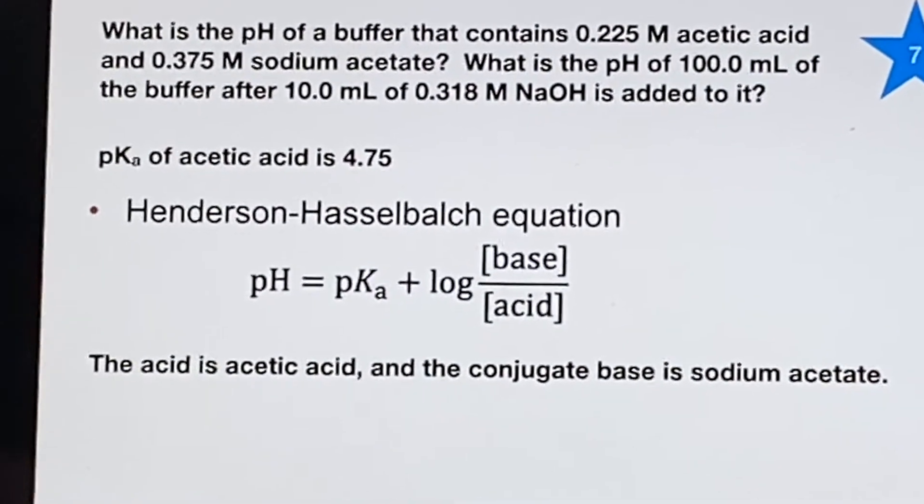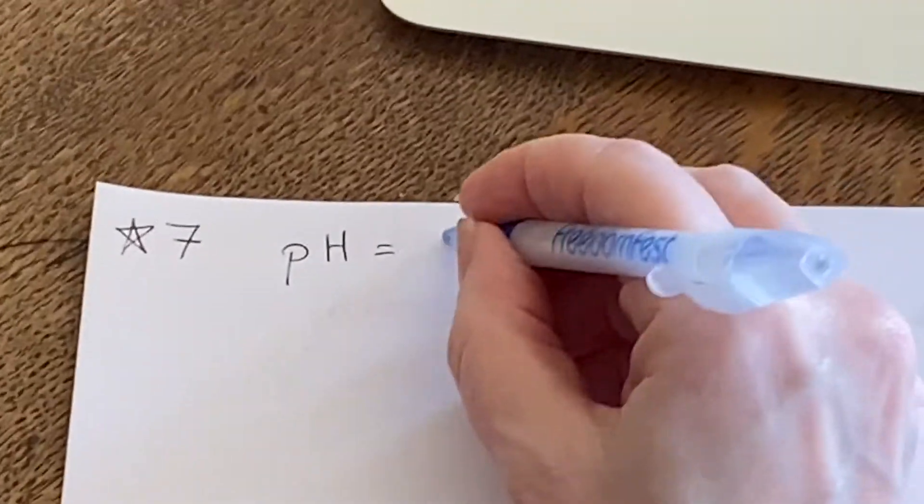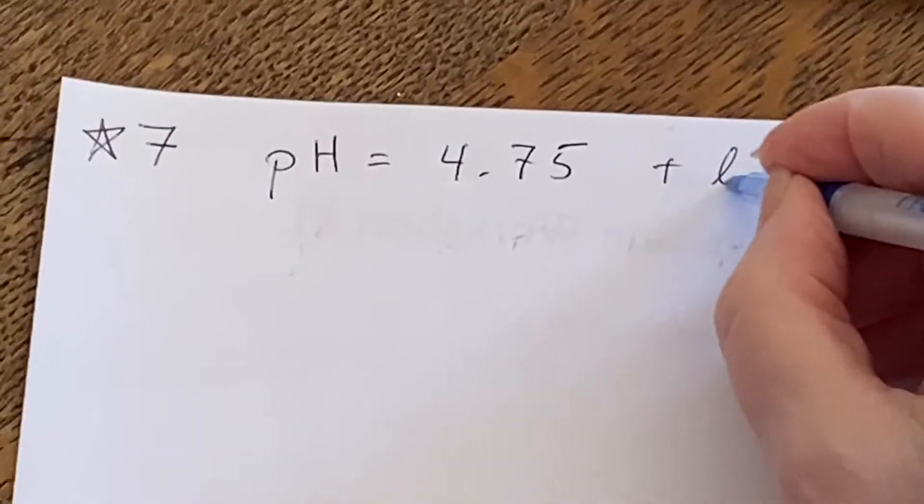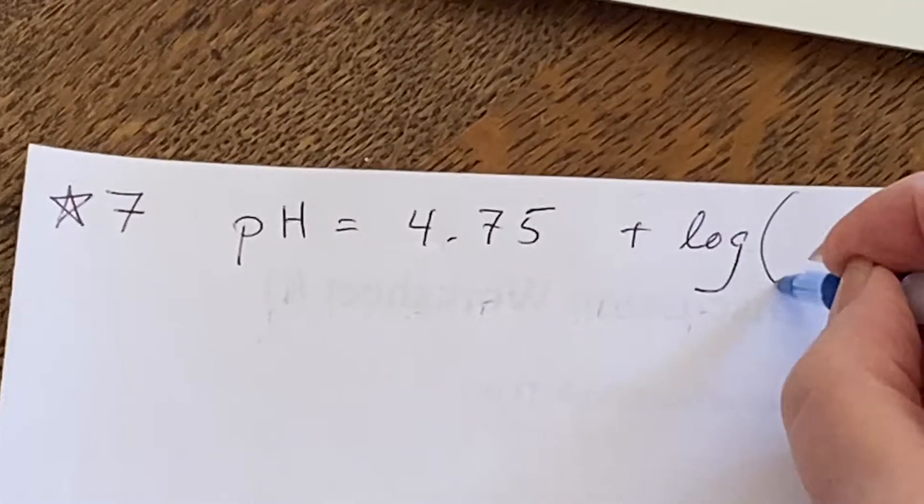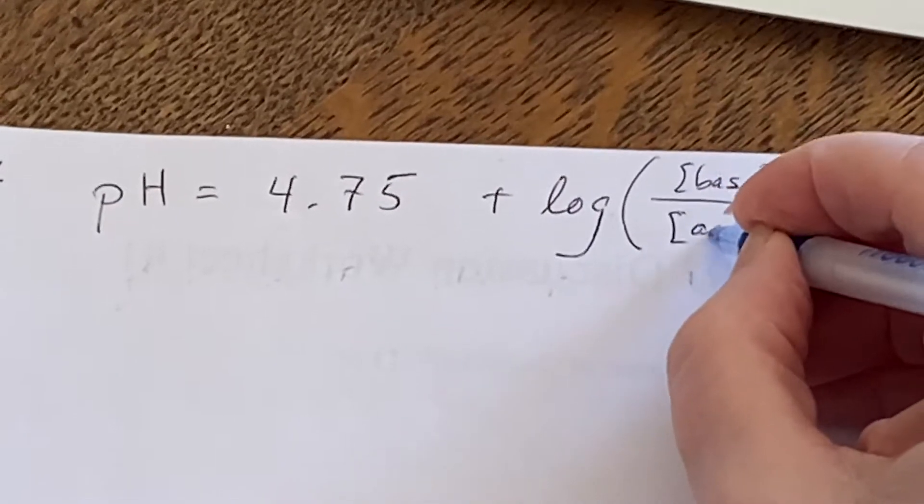So we can just start answering this by saying pH equals the pKa, which we know is 4.75, and adding to that the logarithm of the base over the acid. Base concentration, acid concentration.